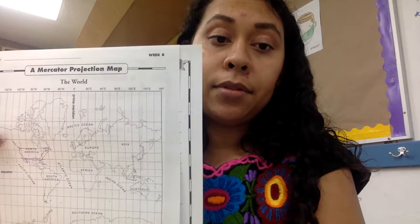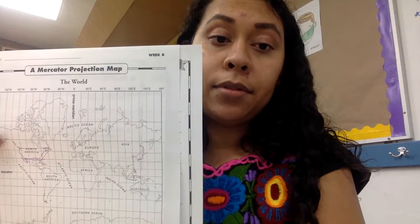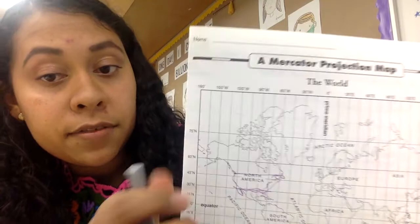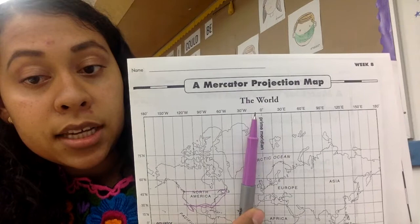So now I am on the week eight page where it has the map. It says Mercator projection map, the world. Along the top are all of the different degrees, with the prime meridian at zero degrees, and then each way it goes every 30 degrees.